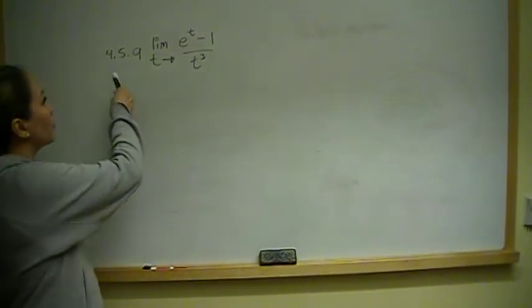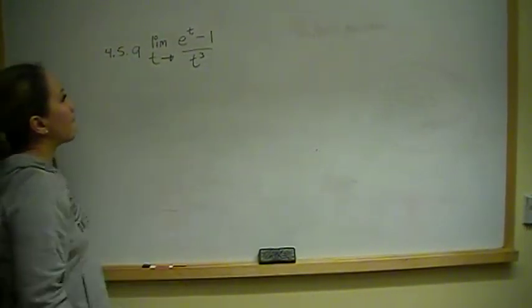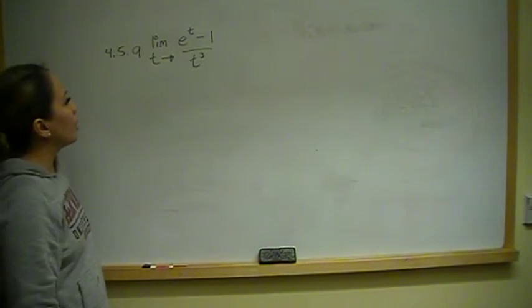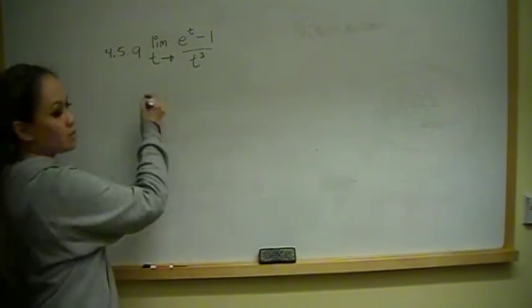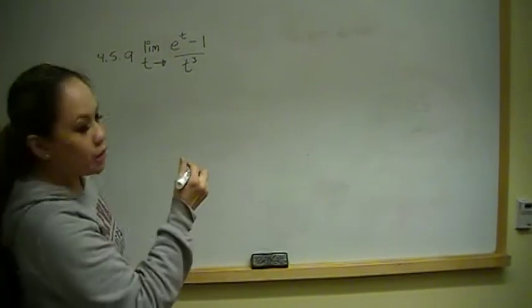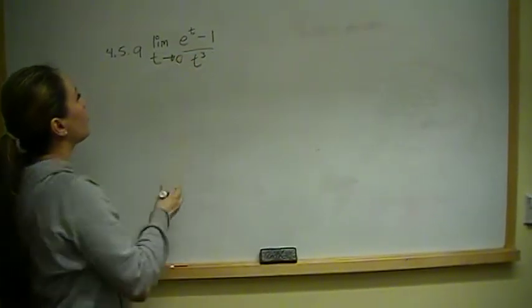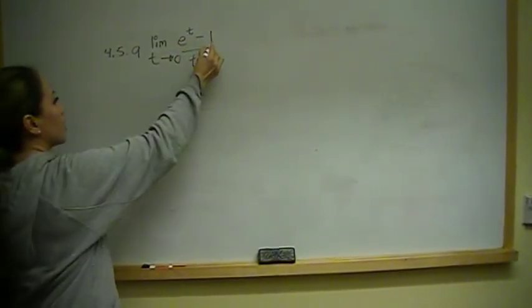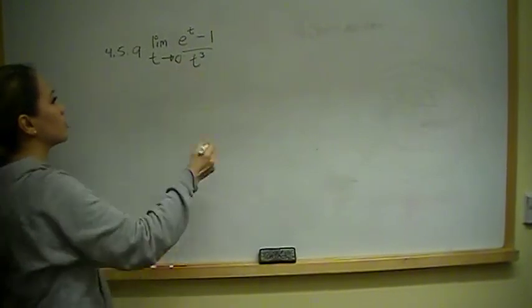Okay, so for problem 4.5.9, as t goes to 0, we're supposed to find the limit of e to the t minus 1 over t cubed.